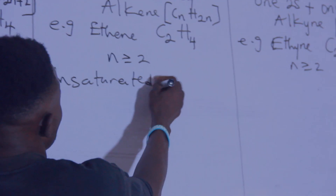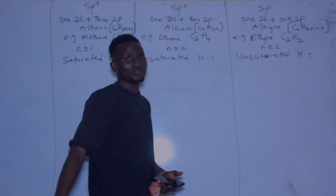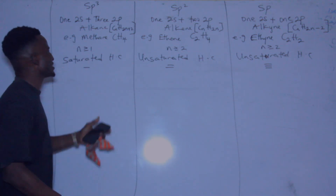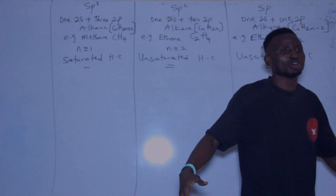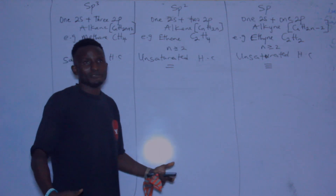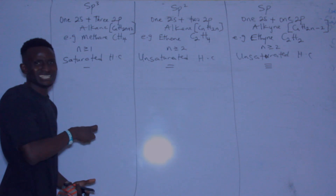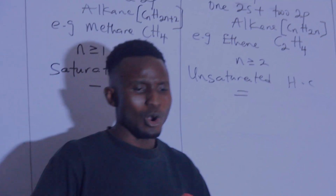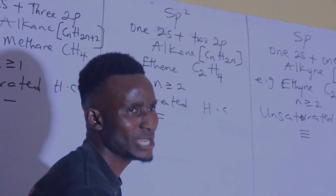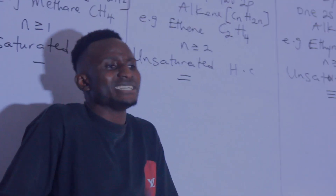Why do we call them saturated and unsaturated? Alkane has a single bond, alkene has a double bond, and alkyne has a triple bond, so they are not saturated. Alkane is the only saturated one because it is single-bonded and has no space to attach more atoms. That is why alkane undergoes substitution reactions — it is filled and must substitute hydrogen atoms for other atoms. The unsaturated hydrocarbons — alkene and alkyne — can undergo addition reactions because they still have space to accommodate more atoms.